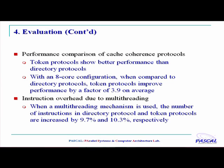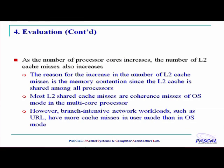In an eight-core configuration, the token protocols will improve performance by a factor of 3.9 on average, which is quite significant. We found that when a good multi-threading mechanism is used, the number of instructions in the directory protocol and the token protocol is increased by a factor of around 10%. The number of L2 cache misses also increases when the number of processor cores increases, as should be expected because memory contention on L2 is the determinant factor. Most of those are coherence misses, and bandwidth-intensive multi-threaded network workloads such as URLs will have more cache misses in user mode than in OS mode.